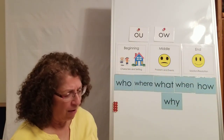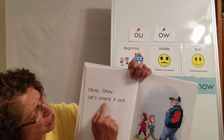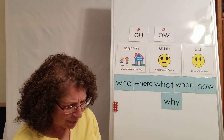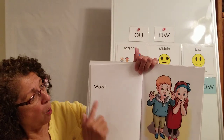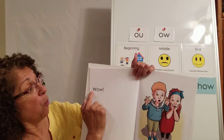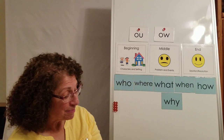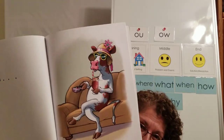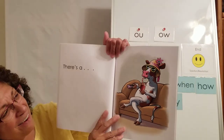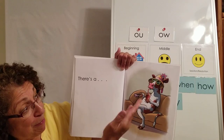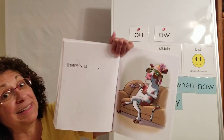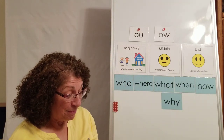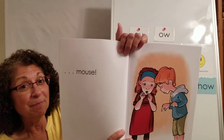Oh no, could that really be? Okay, let's check it out! Oh, another 'ow' word. I wonder if he believes them. Wow! Another 'ow' word — 'wow!' No way! Is there a cow on the couch? Sipping some chocolate milk, watching TV, wearing sunglasses and a hat — is that the silliest cow on the couch? And there's a mouse!